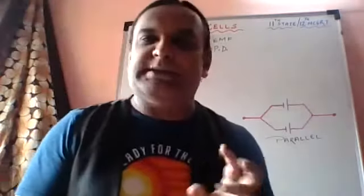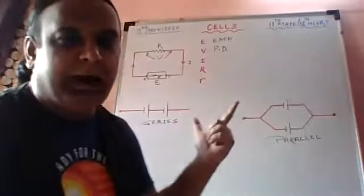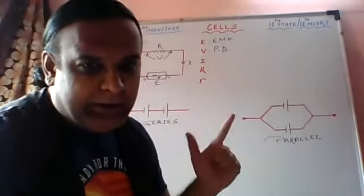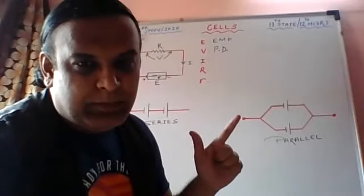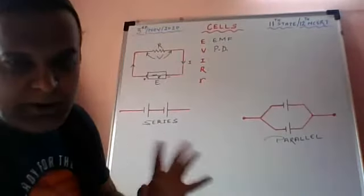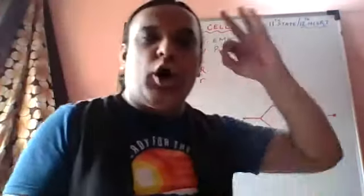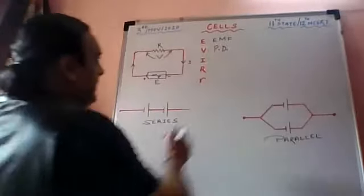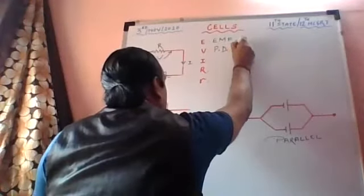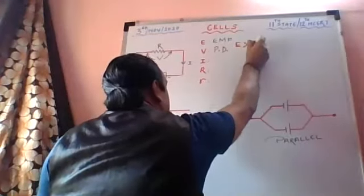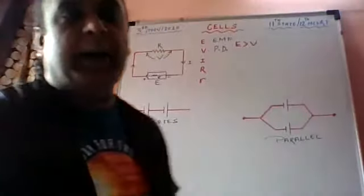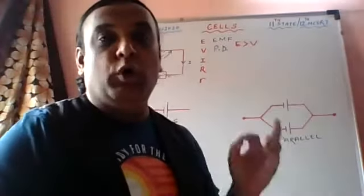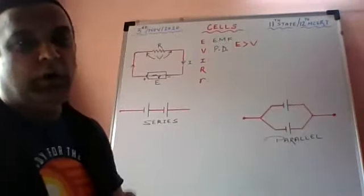Now think and tell me — kawansi badi value hogi, E badi ki V badi? E badi hogi. Very good. Sab ko samajh mein aa raha hai ki E will always be greater than V. So the value of E will always be more than the value of V.